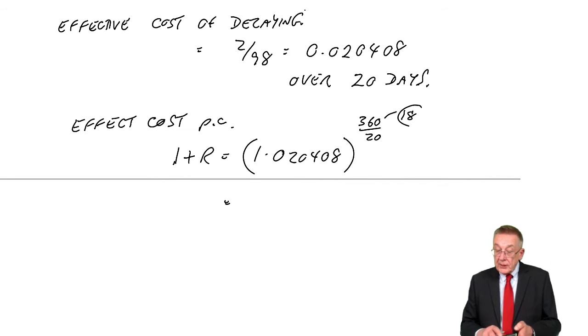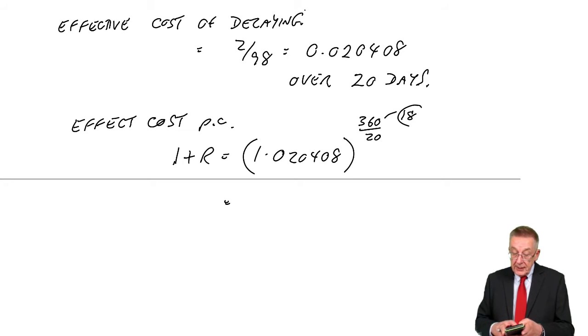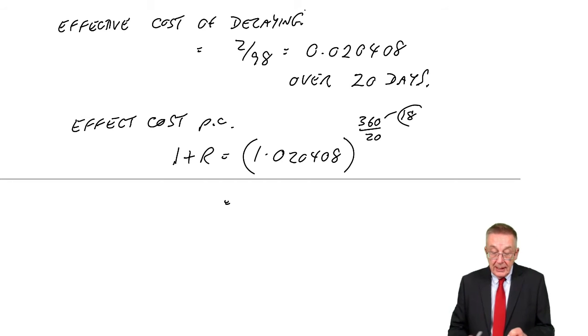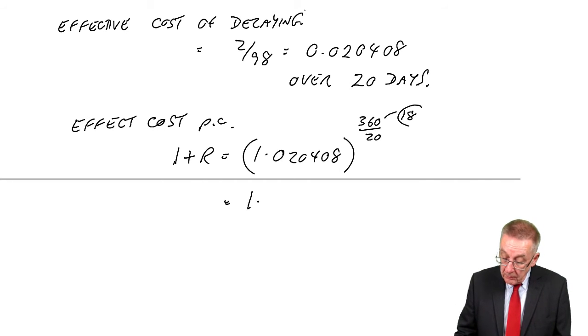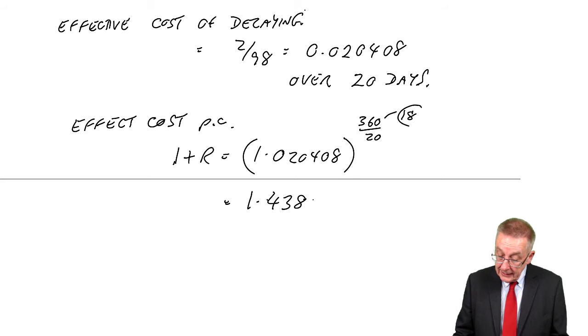It's to the power 18, which gives us 1.020408 to the power 18 is 1.43856. R, therefore, is 0.43856, or 43.856%.